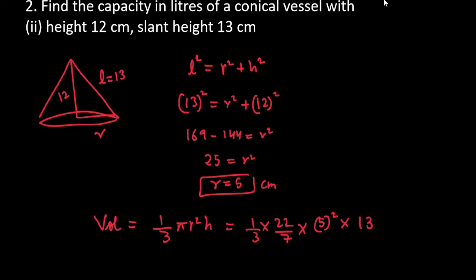13. Sorry, not 13, it is 12. Main height chahiye gi na hamein. So, 12 and 3 can be cancelled here. It will be 4. Baki aap multiply karo, aap ko final answer kya milega?